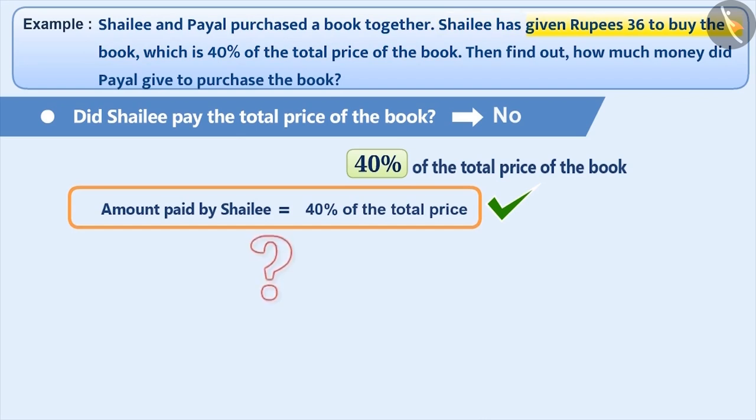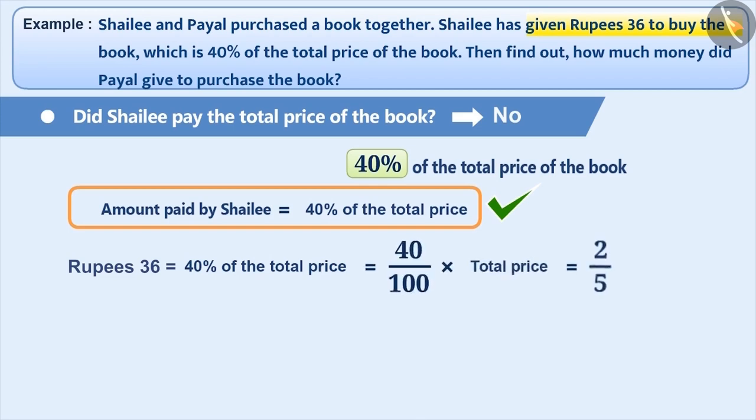But Shailee has given Rupees 36. So what does it mean? Think for a while. You've got it right. Rupees 36 is equal to 40% of the total price. Therefore, Rupees 36 is equal to 40 by 100 into total price, which is equal to 2 by 5 into total price.